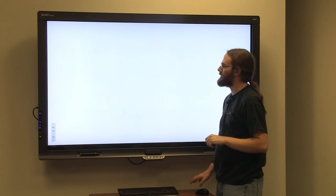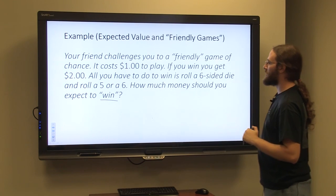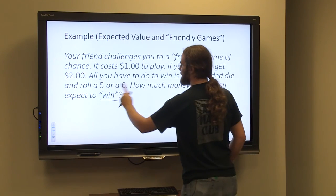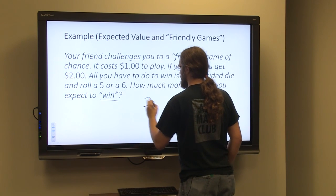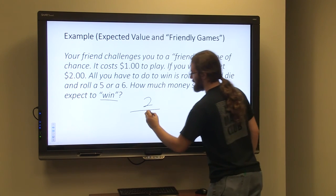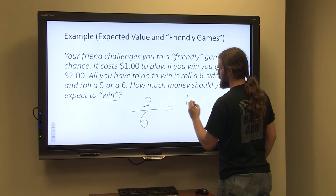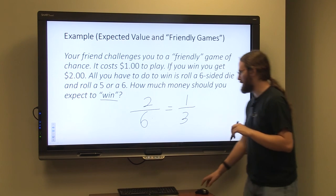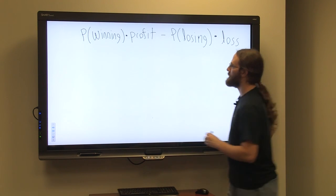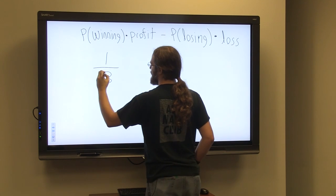So when we take a look at this problem here, you need to roll a five or a six to win. So there are two ways to succeed out of six possible outcomes. So you have a one in three chance of winning. So I'm going to go ahead and plug that in. The probability of winning would be one out of three.